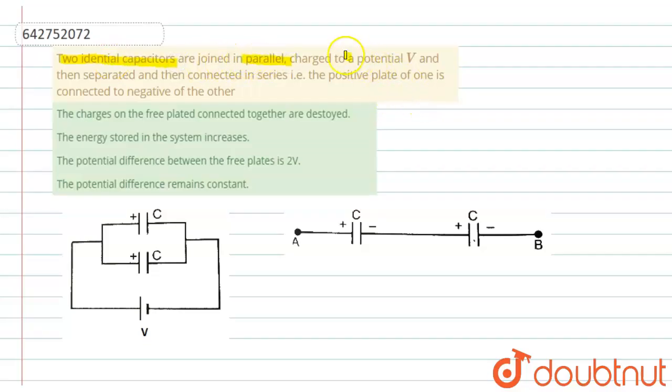They are separated and then connected in series—that is, positive plate of one is connected to negative of the other. We have four options: the charges on the free plates connected together are destroyed; the energy stored in the system increases; the potential difference between the plates is 2V; and the potential difference remains constant.